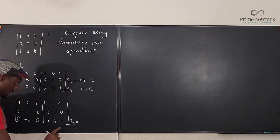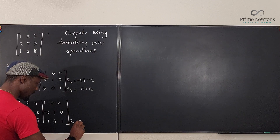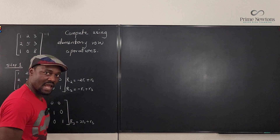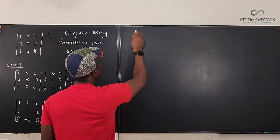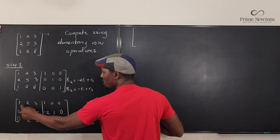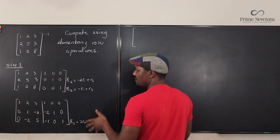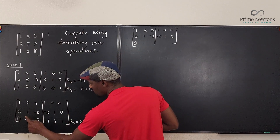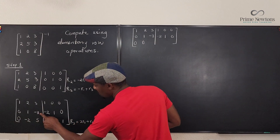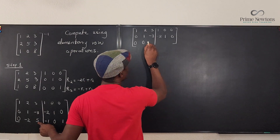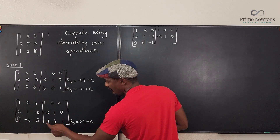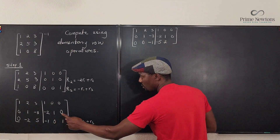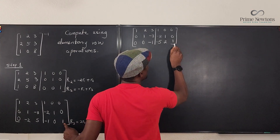New row three = 2·R2 + R3. Two of zero plus zero gives zero. Two of 1 plus -2 gives zero. Two of -3 plus 5 gives -1. On the identity side: two of -2 plus -1 gives -5. Two of 1 plus 0 gives 2. Two of 0 plus 1 gives 1. So that's our new matrix. We need a one in that third pivot position, not a -1. To change -1 to 1, multiply by -1, so new R3 = -R3.